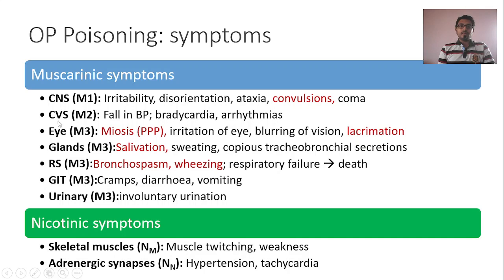Note these contrasting manifestations: the direct action of OP poison on M2 receptors will lead to falling BP and bradycardia, whereas the indirect action via nicotinic receptors will lead to hypertension and tachycardia. The net result can be either of these — either hypotension or hypertension, either tachycardia or bradycardia. So CVS manifestation following OP compound poisoning is not specific; it can be either.